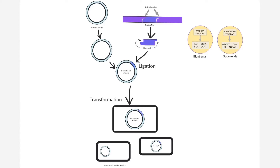In the next process called ligation, the complementary sticky ends help insert the restriction fragment into the plasmid vector. Blunt end ligation is possible as well. This results in the formation of a recombinant DNA molecule.